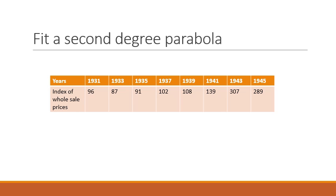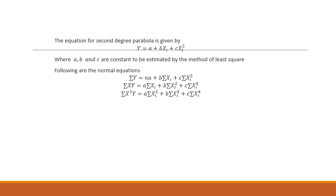We write the equation: y = a + bx + cx², which is also called the second degree parabola, second degree polynomial, parabola, or quadratic equation. These are all names for this equation where a, b, and c are constants to be estimated by the method of least squares, which was already discussed earlier.